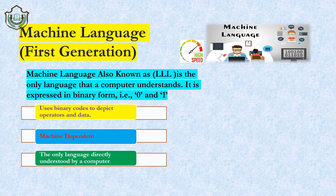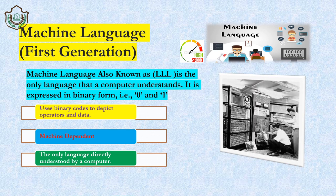Machine language uses binary codes — 0 and 1 — to represent operators and data. It is machine dependent, and the computer understands only and only machine language.